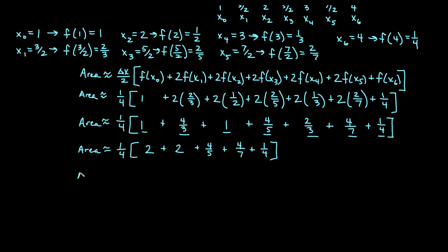If I go ahead and get a common denominator inside, and I think about what do 4 and 5 and 7 all go into, I might say they all go into 140. So this would be 280 over 140, plus another 280 over 140, plus to get 140 here, I'd multiply by 28. So that would be 112 over 140. To get 140 here, I'd multiply by 20. So that would be 80 over 140. And then to get 140 here, I would multiply by 35. So that would be 35 on top.